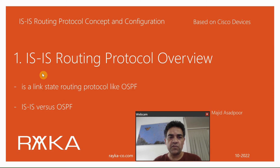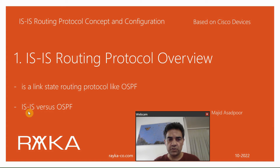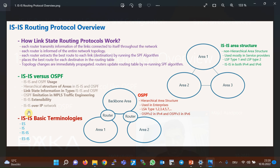In the first video, we will have an overview of the ISIS Routing Protocol, which is a link-state routing protocol like OSPF, but there are some differences that we will discuss throughout the course. ISIS, like OSPF, is considered a link-state routing protocol, and therefore the rules governing ISIS are those defined in the link-state routing protocols. Each router transmits the information of the links and routers connected to itself throughout the network, and therefore each router is informed of the entire network topology. Then, each router extracts the best route to each link in the network by running the SPF algorithm and places the best routes into the routing table.